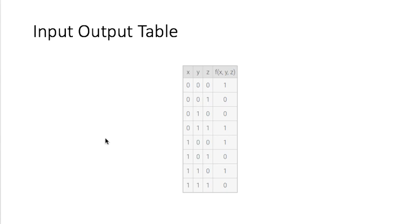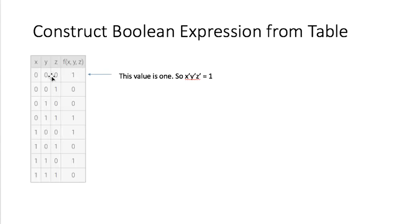For example, let's say the first row. The first row's output value is 1. Then how could I form x is 0, y is 0, and z is 0, to come up with output is 1?